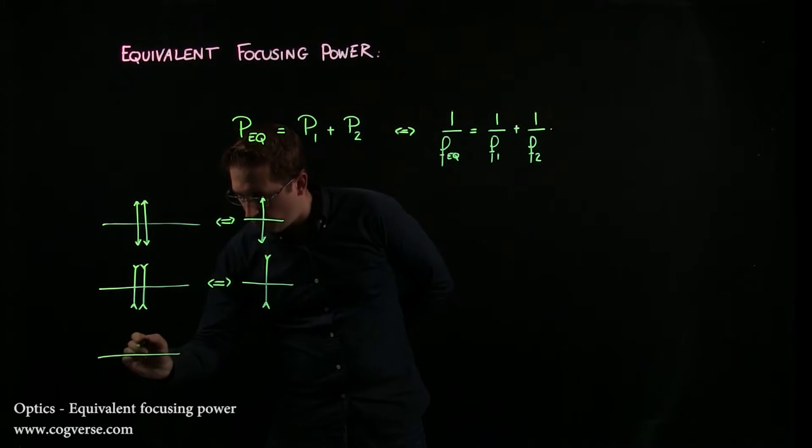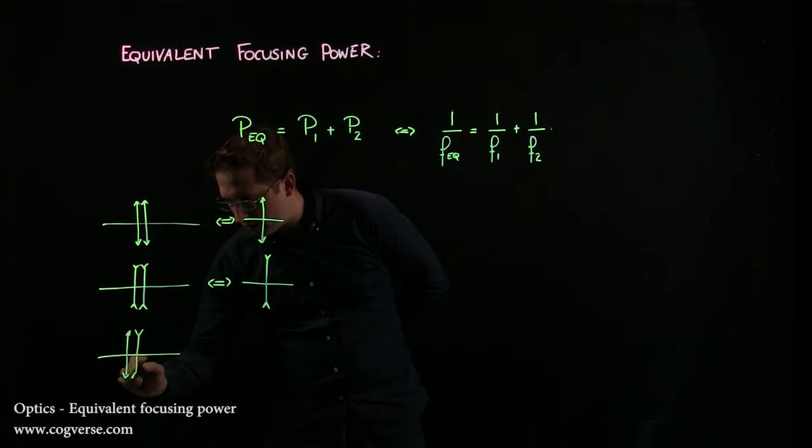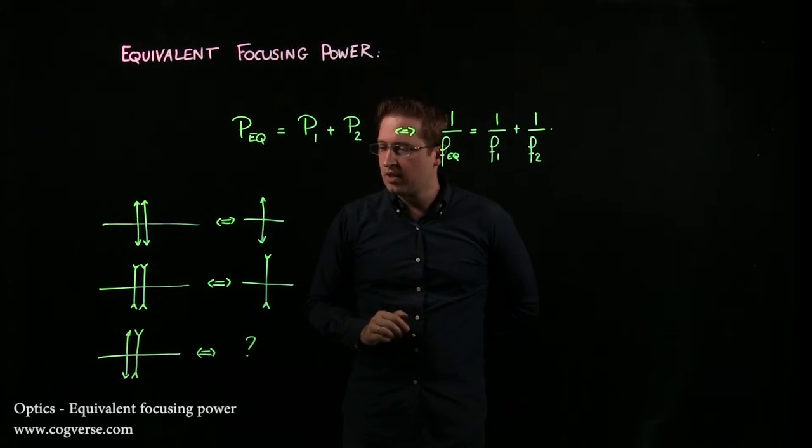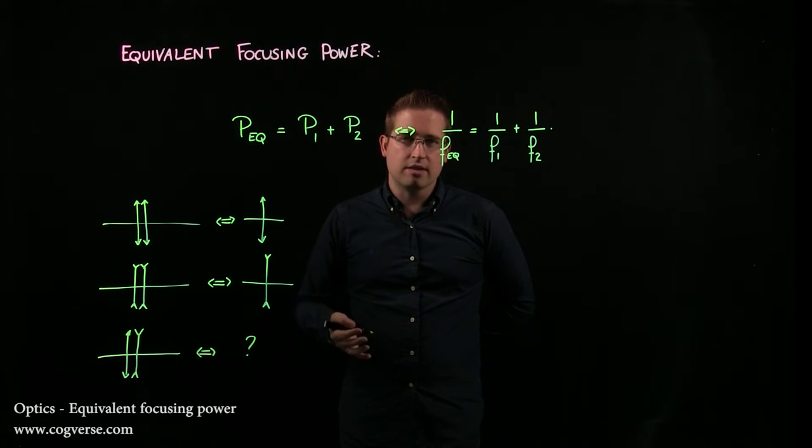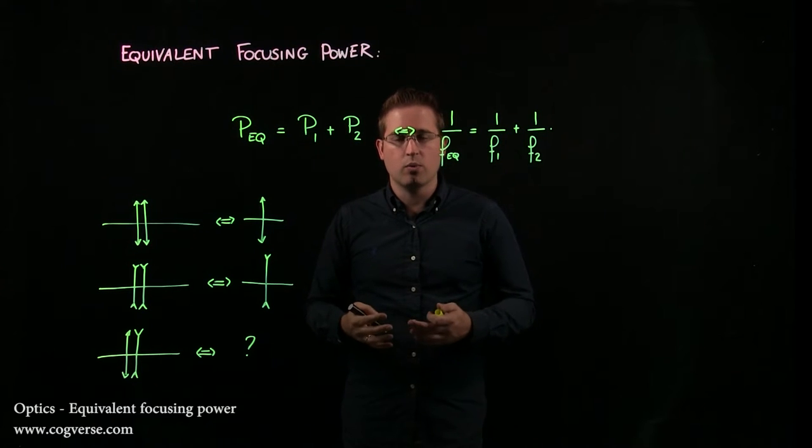It gets trickier when we choose to assemble one converging lens and one diverging lens, and then we're not quite sure. It depends on which lens has the greatest focusing power, because that one will take over and dictate what the nature of the equivalent lens is.